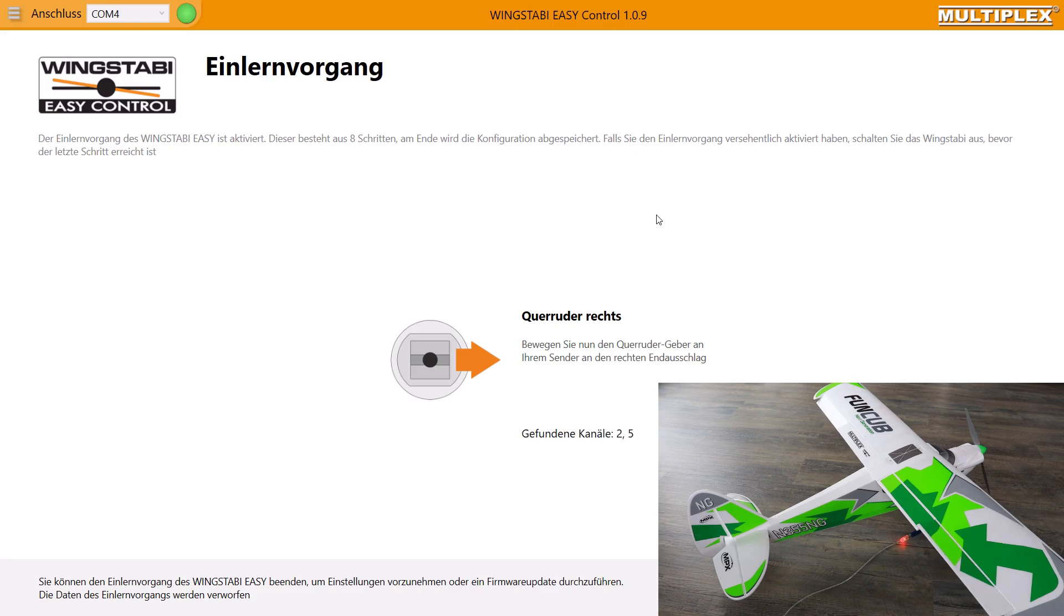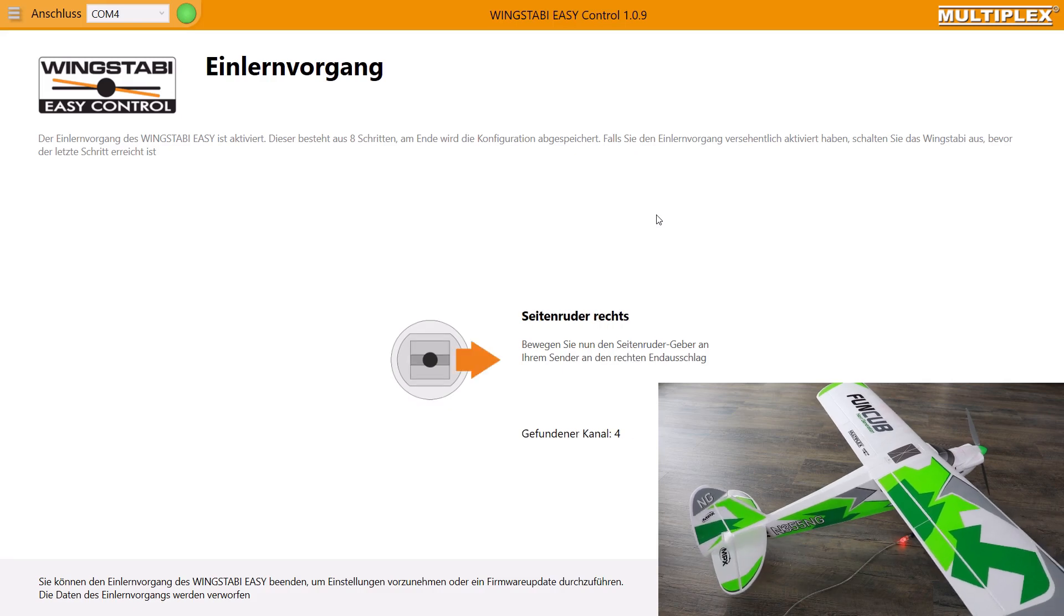The second step is to move your aileron stick right. If Wing Stubby recognizes the right channels, the ailerons will make a short twitch. After this, you have to move the aileron stick to the left point. After this comes elevator down, then elevator up. Here it's always important to stay at the maximum endpoints with your sticks until Wing Stubby wants the next step. The last thing is to move the rudder stick to the right and then to the left. And after these 8 steps, your Wing Stubby teach-in process is completed.